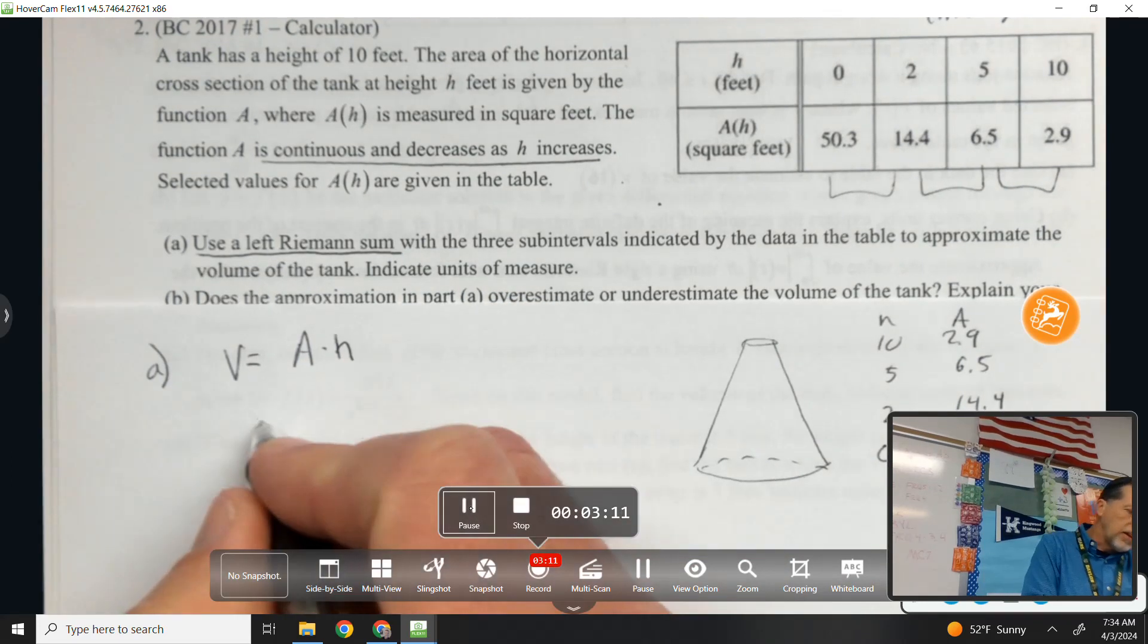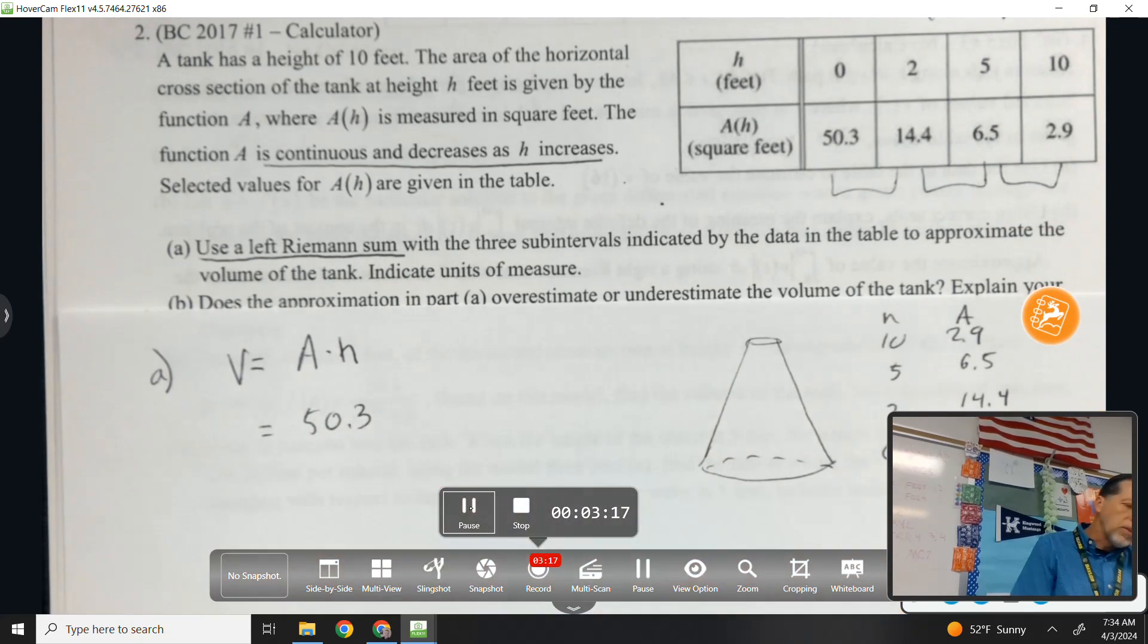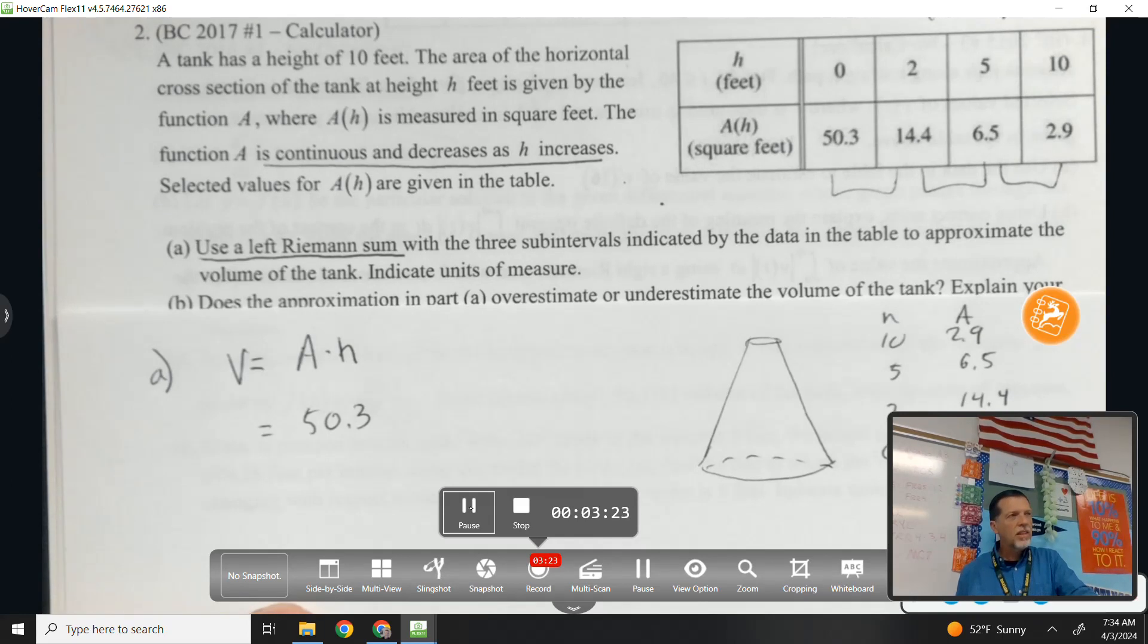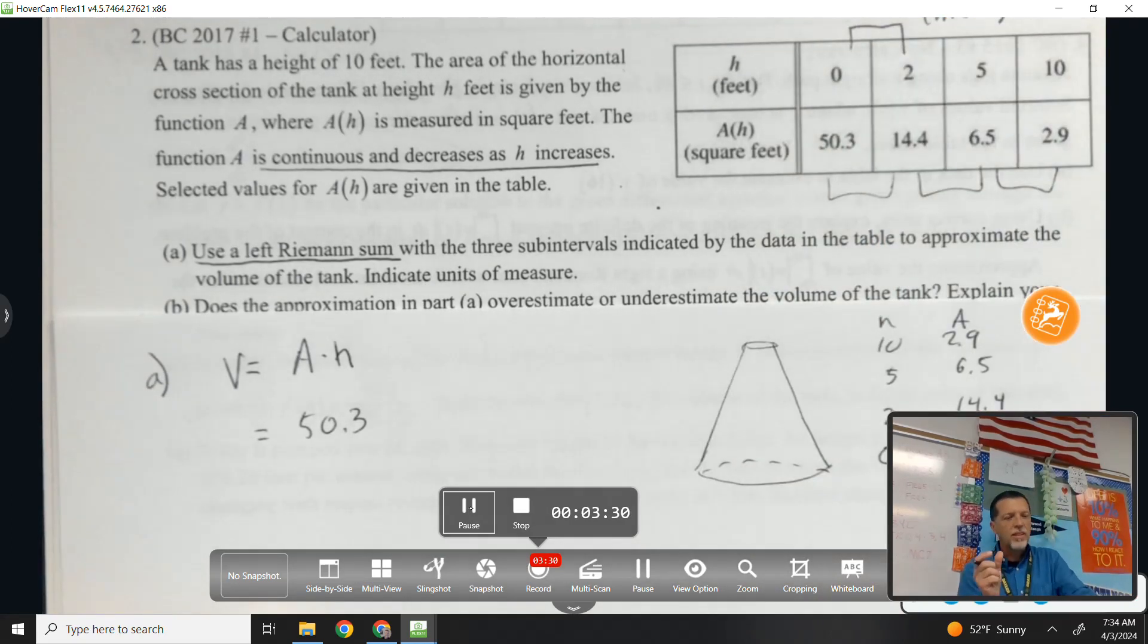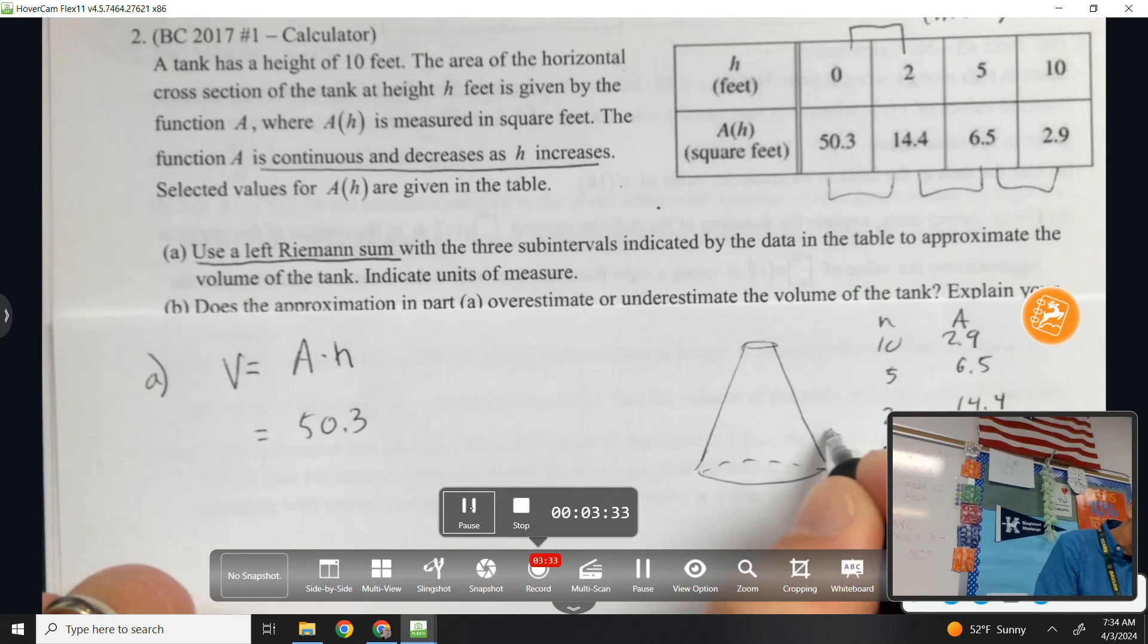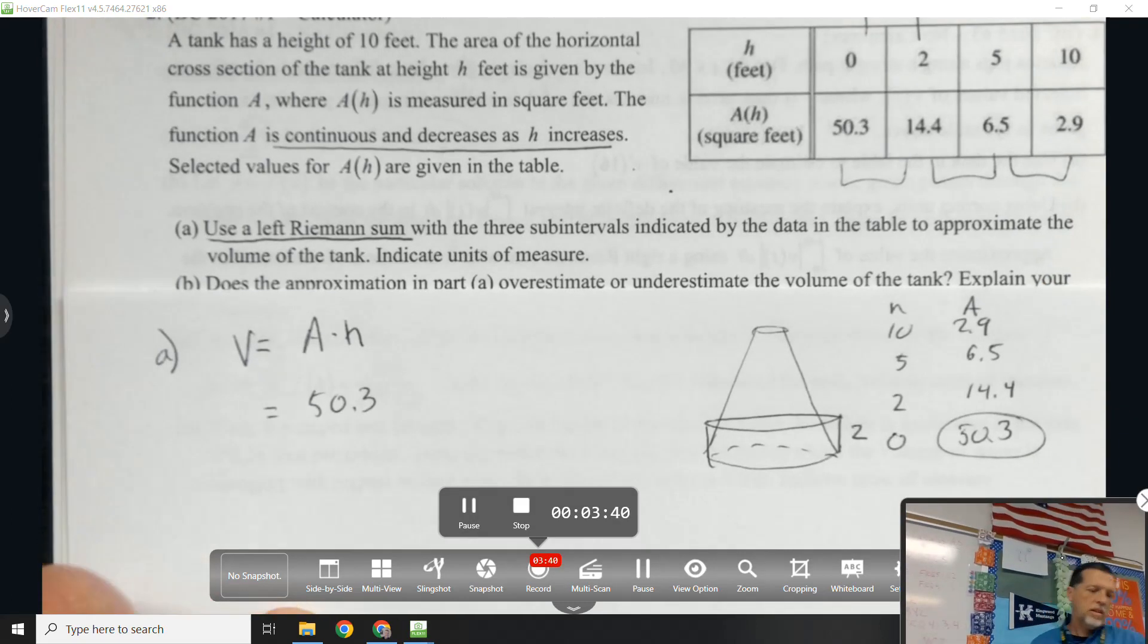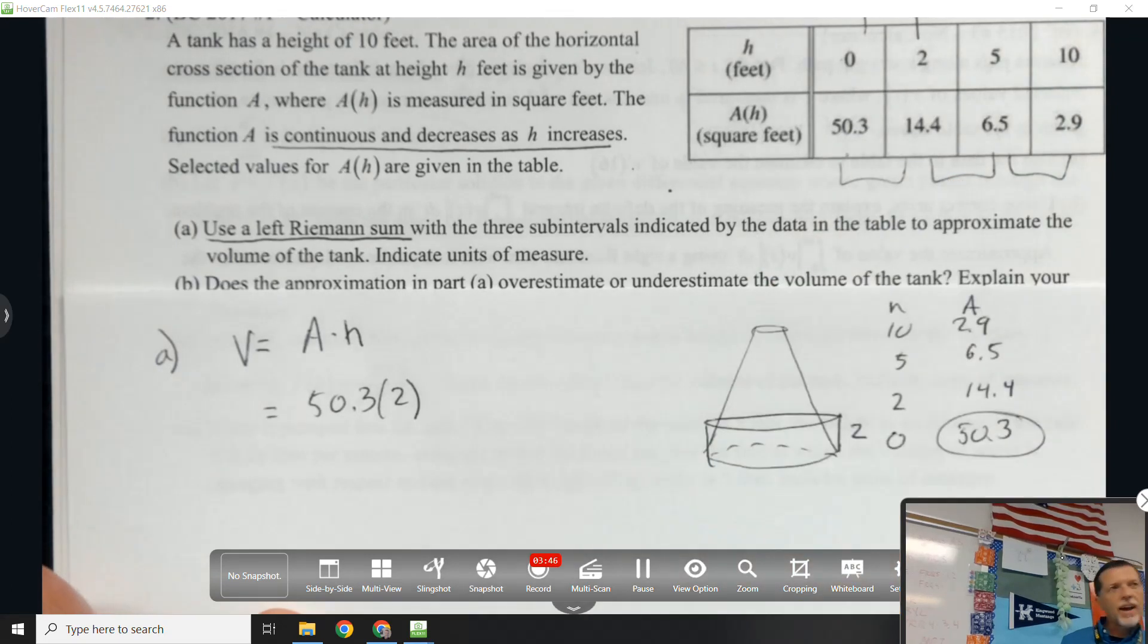Part A, use a left Riemann sum with three sub-intervals. Well, yes, because that's the only way we can do it. Three sub-intervals using the data in the table to approximate the volume of the tank. Okay, so the volume of the tank would be area times height. That would give us a volume. So the area, the first area, if we're going to left-hand sum, is 50.3. What should we use for the height for that area?